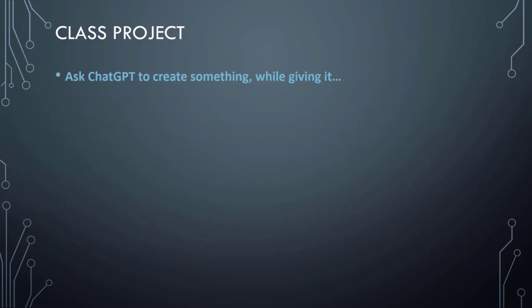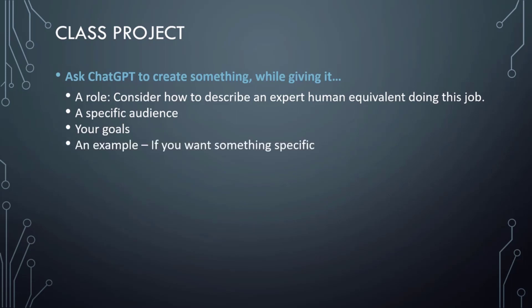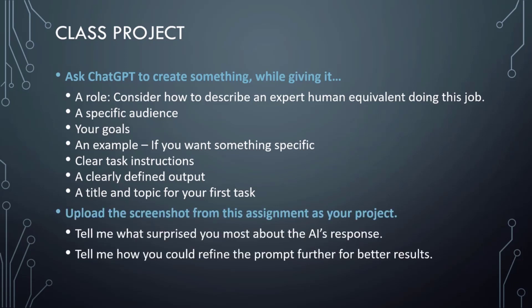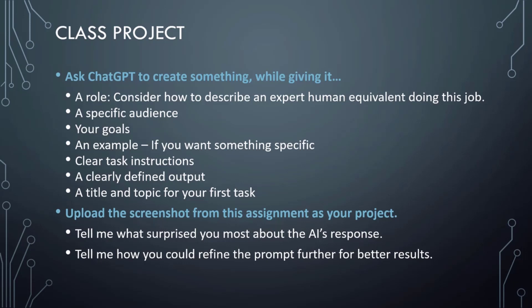Now, a quick class project: go over to ChatGPT to practice refining your prompts. Ask it to create something while giving it a role — define the role for the AI as you would describe a human expert equivalent doing this job — a specific audience, your goals, an example if you want something specific, clear task instructions, a clearly defined output, and a title and topic. For your first task, upload a screenshot from this assignment as your project. Tell me what surprised you most about the AI's response and how you could refine the prompt further for better results.